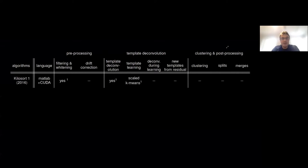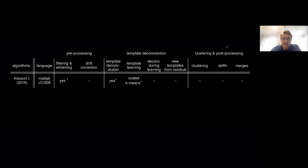It was developed primarily on Neuropixels data, and it has evolved over the years. Today I'm going to describe this evolution so you can see it here. It starts in Kilosort 1 with a few features — we're going to get into exactly what those steps are.